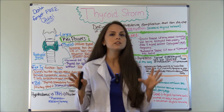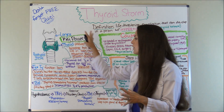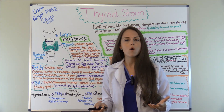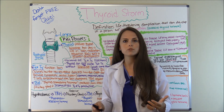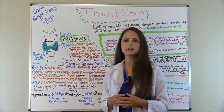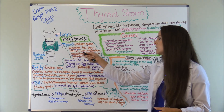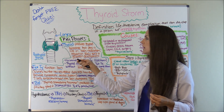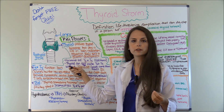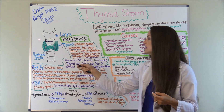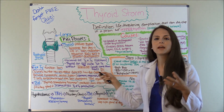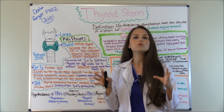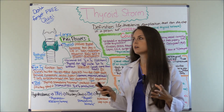Before we get into the causes, the signs and symptoms, and the nursing interventions, let's go over the basics. Because if you can understand the basics, you can understand why this patient looks so sick and why we're doing these certain interventions for them. Let's talk about the thyroid gland a little bit. The thyroid gland sits below your larynx, which is your voice box, and it's a butterfly-shaped gland. This gland releases thyroid hormones, and thyroid hormones play a huge role in how your body functions.